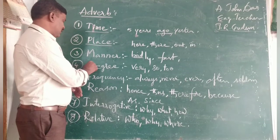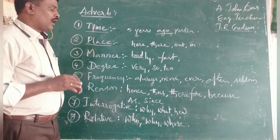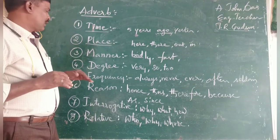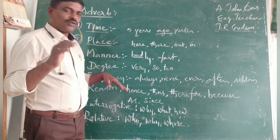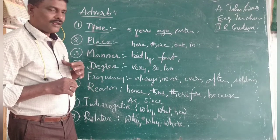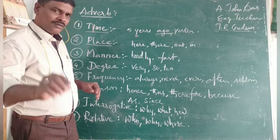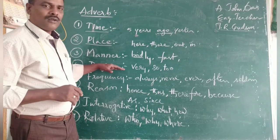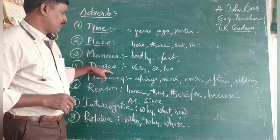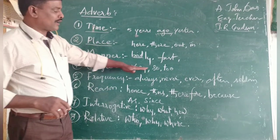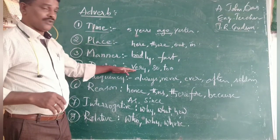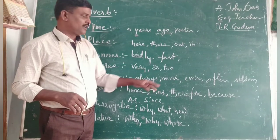Adverbs of degree — degree means your ratio, how hard or how good you have done something. If you see words like 'very,' 'so,' 'too' — these give something more meaningful to the quality or attitude. For example: 'She is beautiful,' 'She is very beautiful,' 'She is so beautiful,' 'She is too beautiful,' etc.